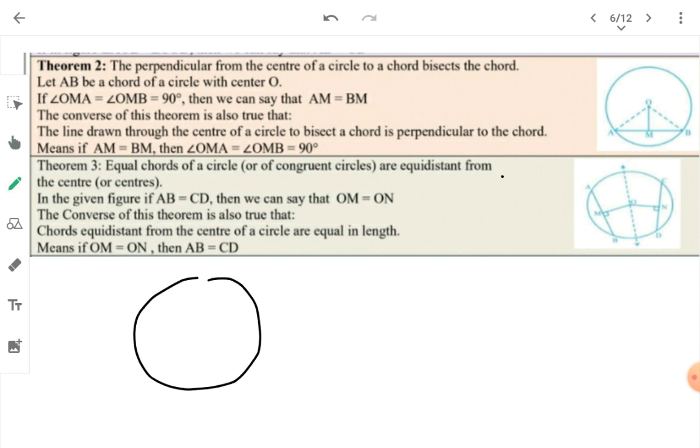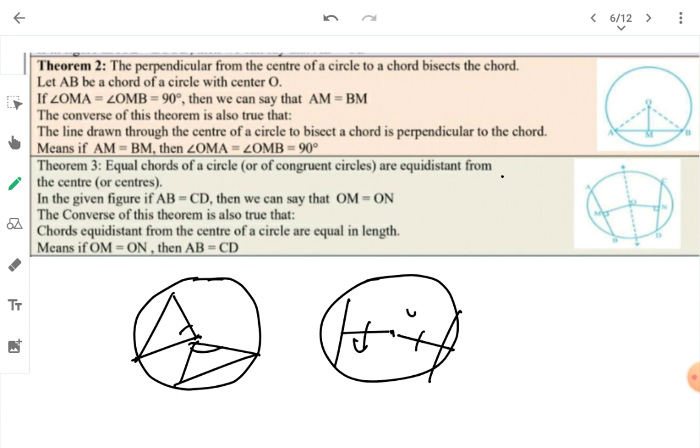If you have a circle and you draw two equal chords, then they will be equidistant from the center. This distance will be equal. If this is 4, then this is 4. This is theorem 3. This was theorem 2. And the converse of this is also correct, and the converse of this is also correct.